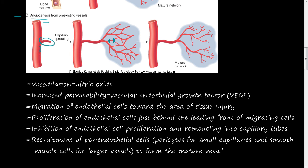Inside these vessel walls there are endothelial cells — these one-layer-thick cells, especially in capillaries. Vasodilation occurs because nitric oxide (NO) is released from these cells as paracrines, acting on adjacent cells to cause vasodilation, making the tube bigger. There is also increased permeability, caused by vascular endothelial growth factor or VEGF, which allows new cells to come through.